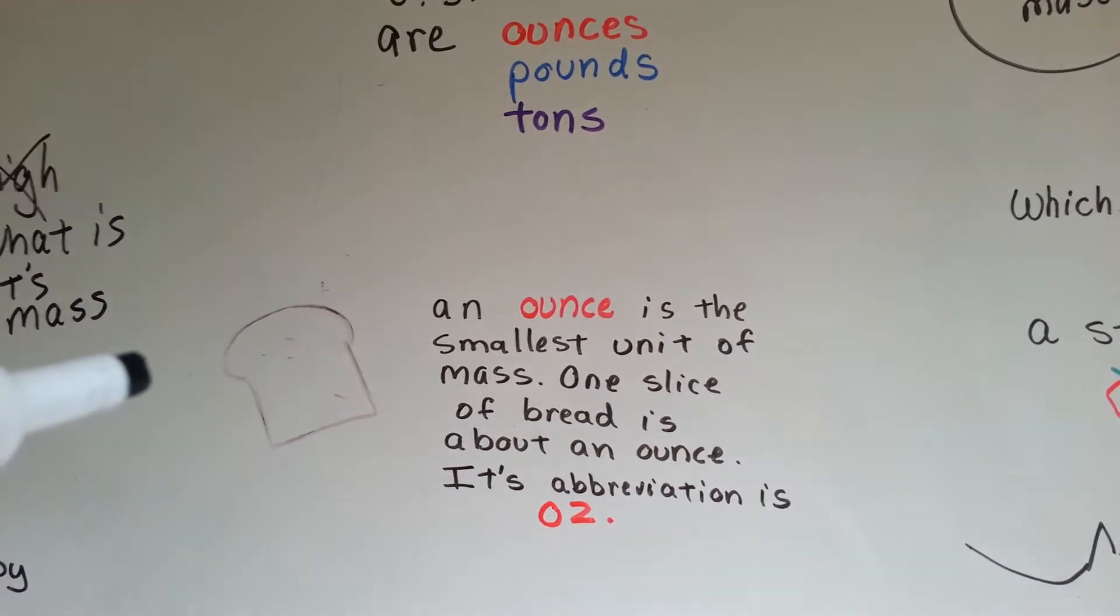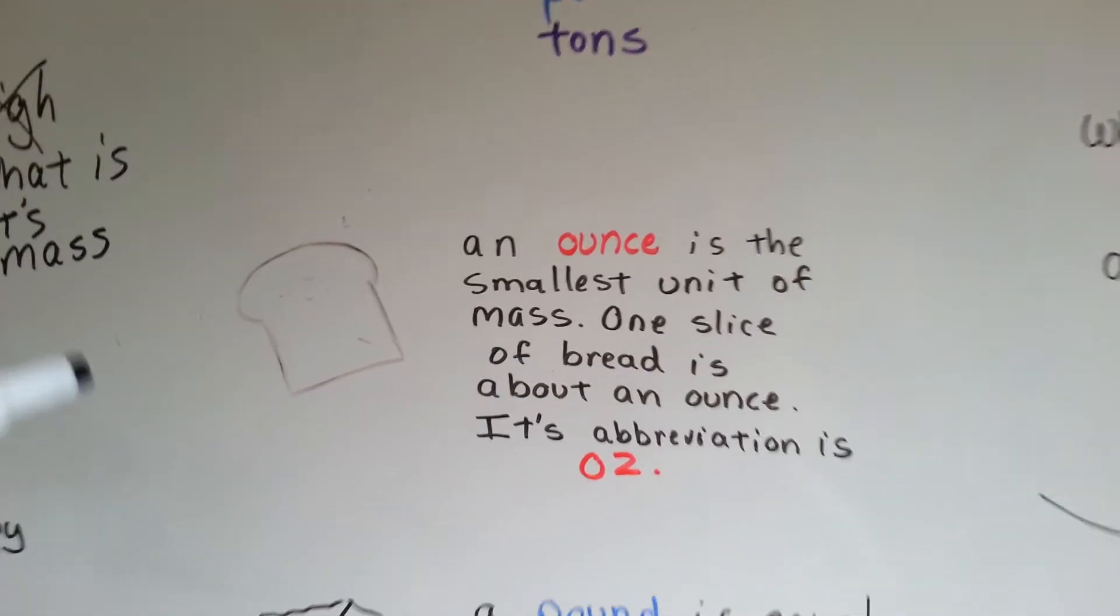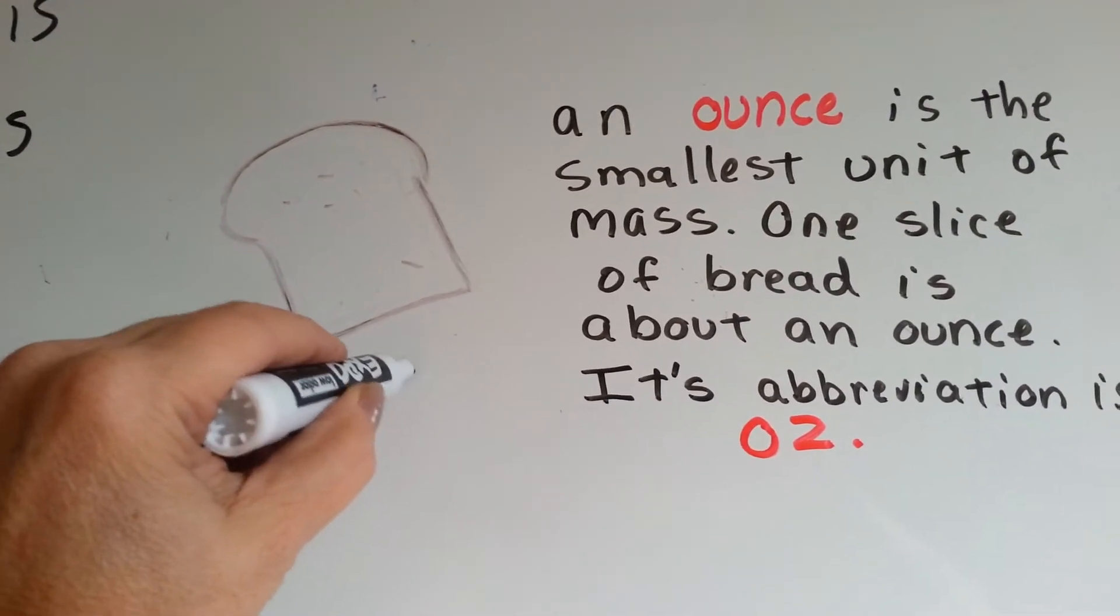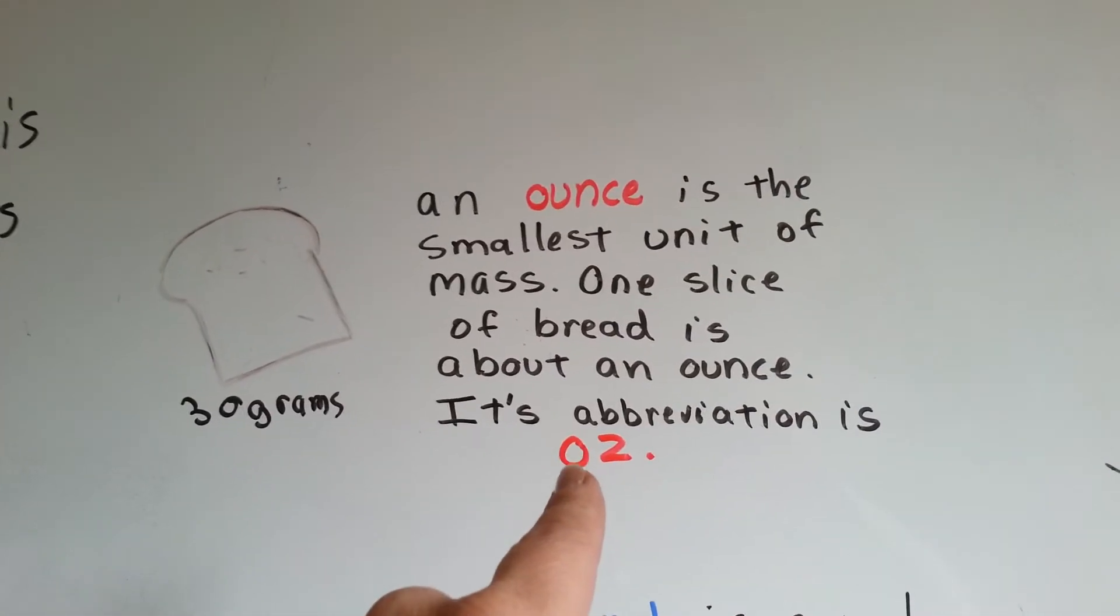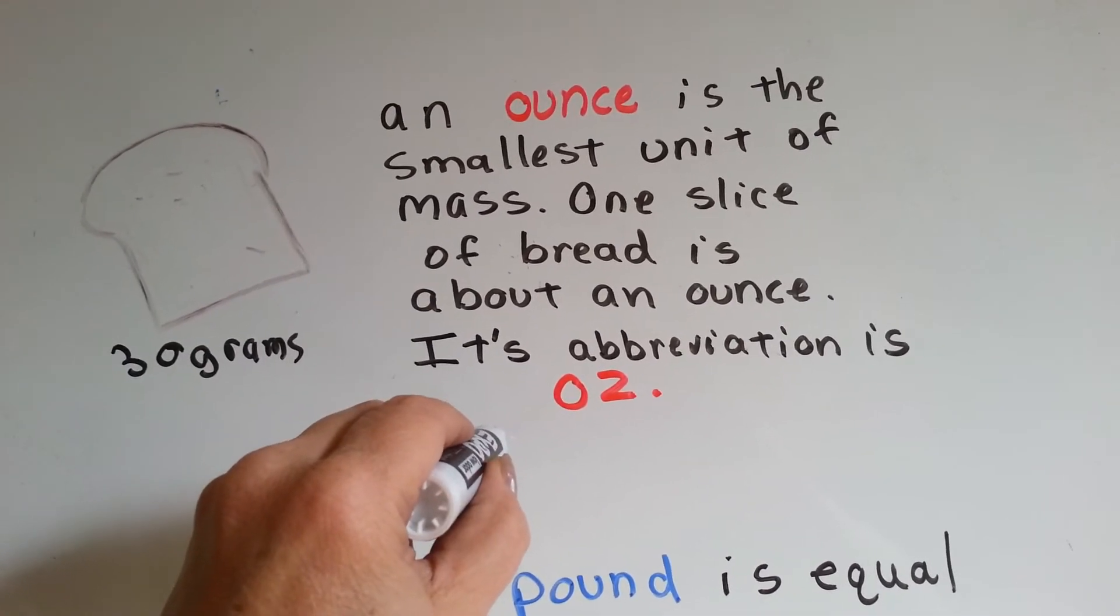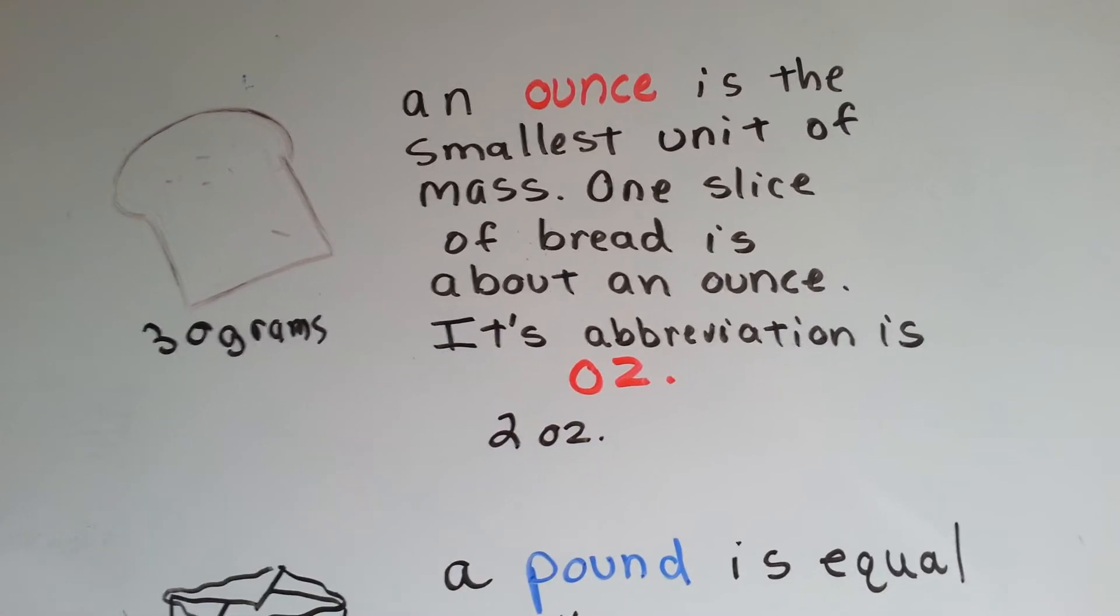An ounce is the smallest unit of mass. One slice of bread is about an ounce. So that means one slice of bread is around 30 grams, right? Because we just read that. Its abbreviation is O-Z. So you could see someone write two O-Z means two ounces.